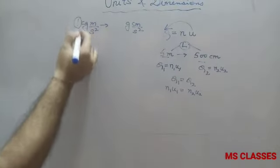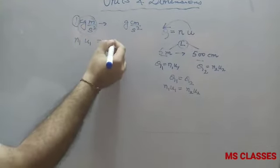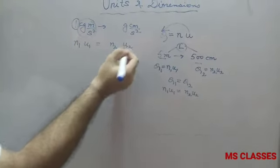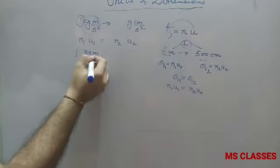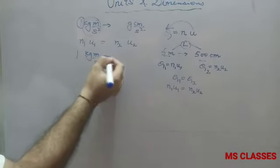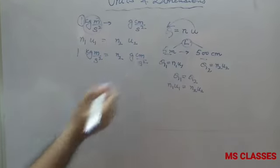So we write: N₁ = 1, U₁ = kg·m/s², N₂ is what we have to find, and U₂ = gram·cm/s². Using the formula N₁U₁ = N₂U₂.